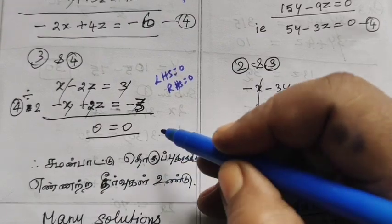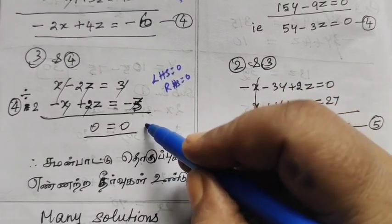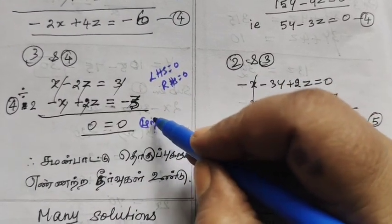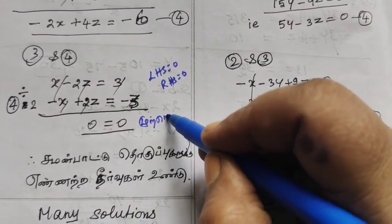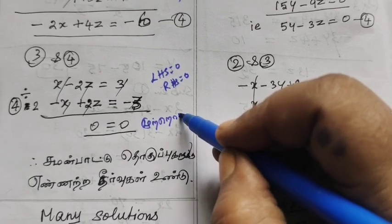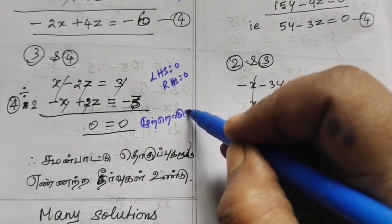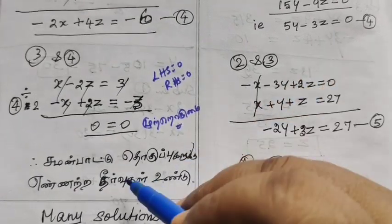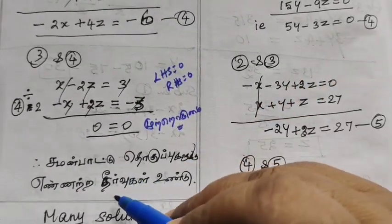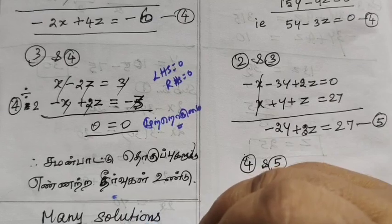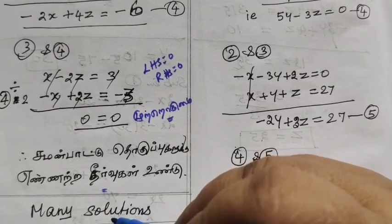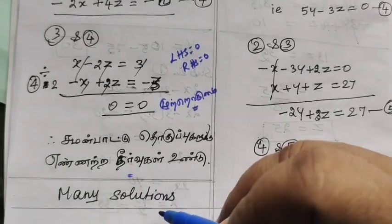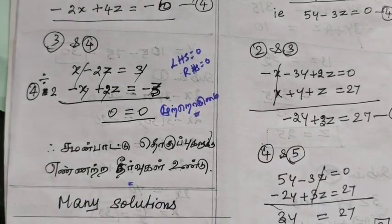What do we see here? We see that x minus 1 is equal to x minus 1. This is an identity, so the system has infinitely many solutions.